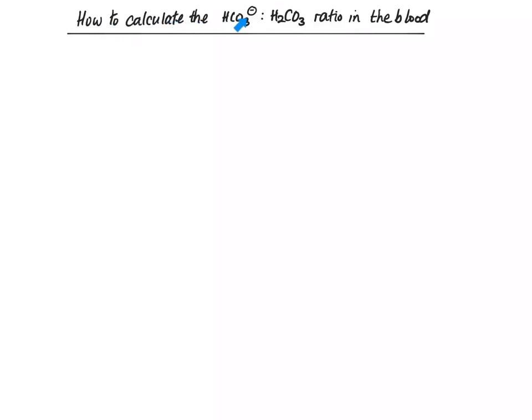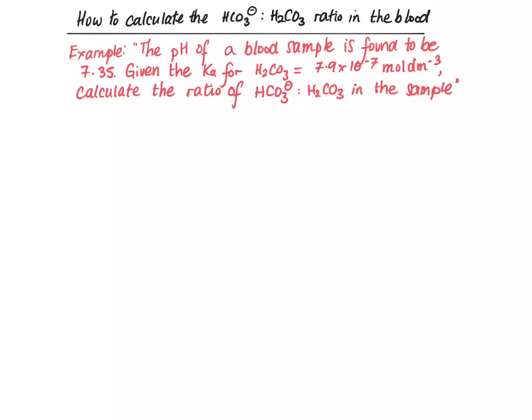How to calculate the ratio of HCO3- to H2CO3 in the blood? A typical exam question would be this: The pH of a blood sample is found to be 7.35. Given the Ka for H2CO3, carbonic acid, is 7.9 times 10 to the minus 7 moles per dm cubed, calculate the ratio of HCO3- to H2CO3 in the sample.